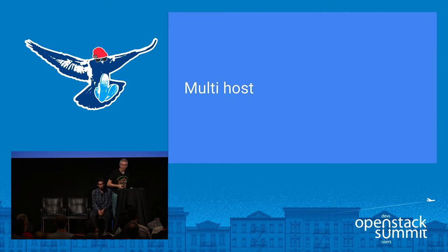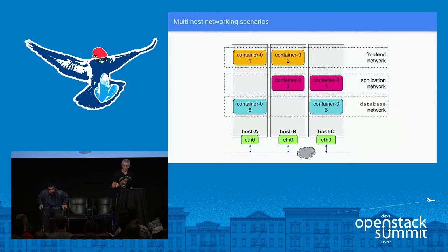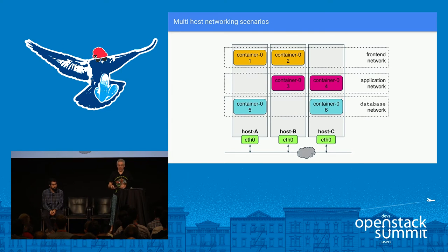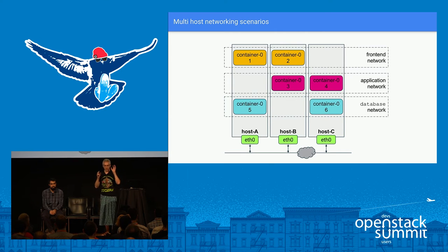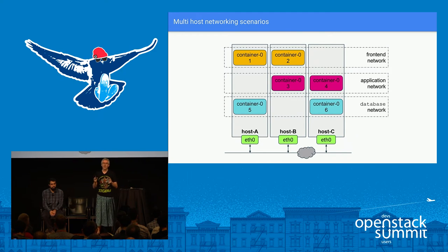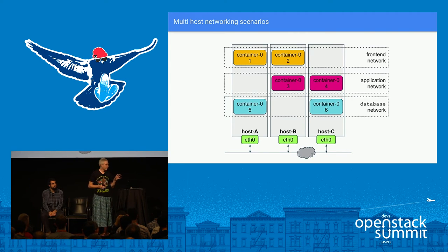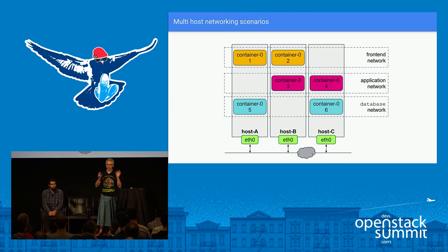Now we move on to wanting to run containers on multiple hosts instead of just one. When you do that, two new factors come into play. One is that you need to start being more careful with your IP addressing. If all containers were on a single host, the IP addresses they use are never going to go anywhere outside that host, so it doesn't really matter what IP addressing you choose.